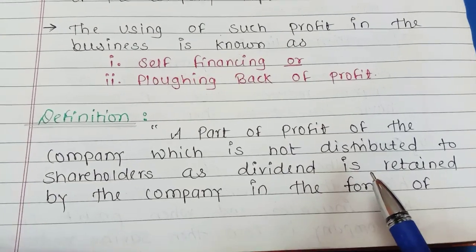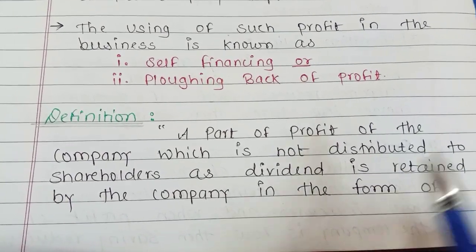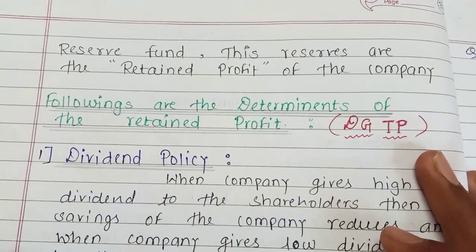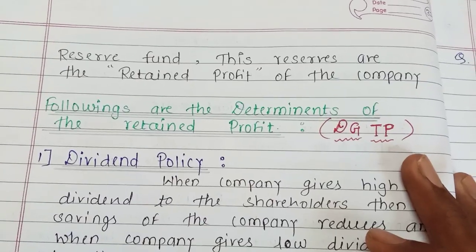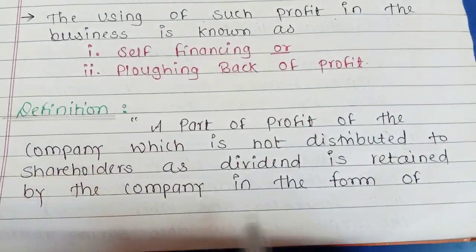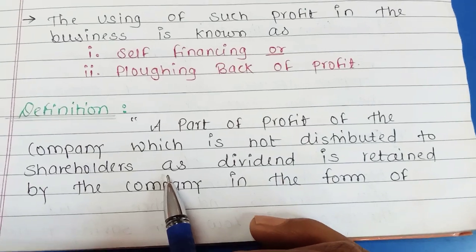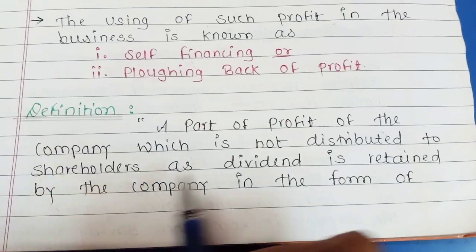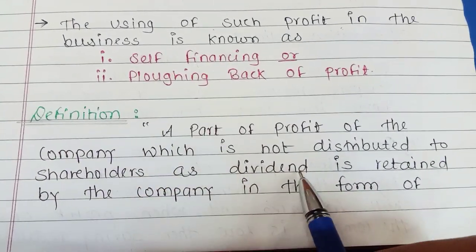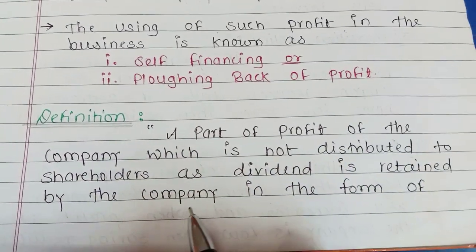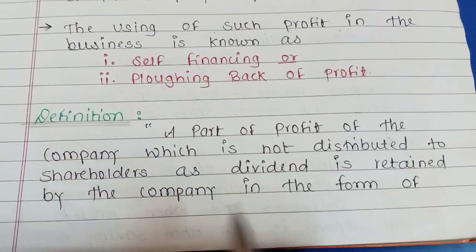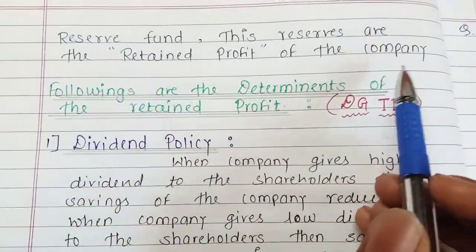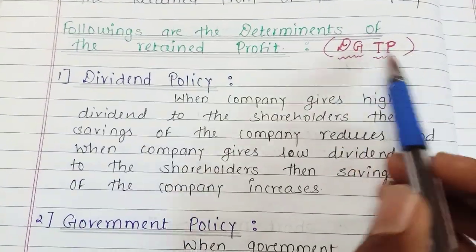Now understand the definition: a part of profit of the company which is not distributed to shareholders as dividend is retained by the company in the form of a Reserve Fund. These reserves are the retained profit of the company.